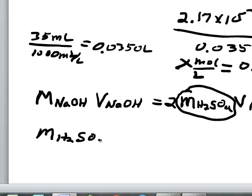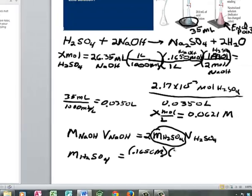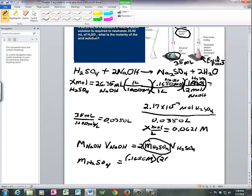We're going to look at the molarity of the H2SO4, which is going to be the molarity of the sodium hydroxide, which is 0.1650 molar, times the volume that was required to neutralize the H2SO4, and that's 26.35 milliliters.